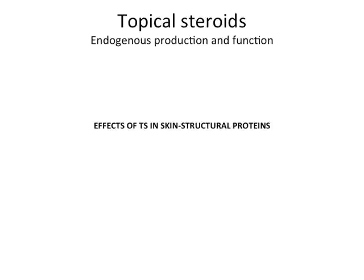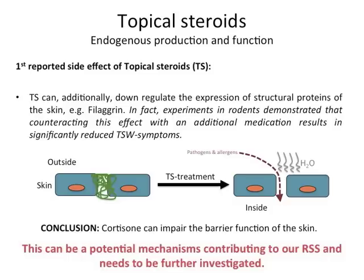Effects of topical steroids in the skin structural proteins. One of the reported side effects of topical steroids is that these substances can additionally down-regulate the expression of the structural proteins of the skin — for example, filaggrin. Experiments demonstrated that counteracting these effects with an additional medication results in a significant reduction of topical steroid withdrawal symptoms. In conclusion, cortisone can impair the barrier function of the skin, which is a potential mechanism contributing to red skin syndrome and needs to be further investigated.